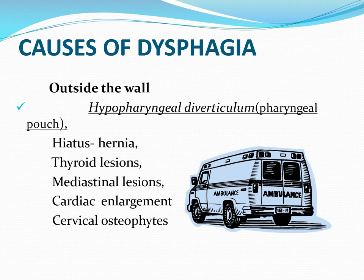Outside the wall, anything pressing the esophagus from outside: hypopharyngeal diverticulum, hiatus hernia pressing the lower end, thyroid enlargement pressing the cervical end or retrosternal pressing the thoracic end, mediastinal lymph nodes, masses in the mediastinum, cardiac enlargement particularly of the right atrium, and cervical osteophytes in the vertebra.